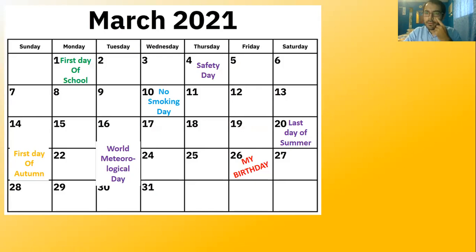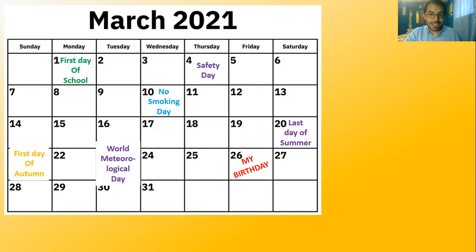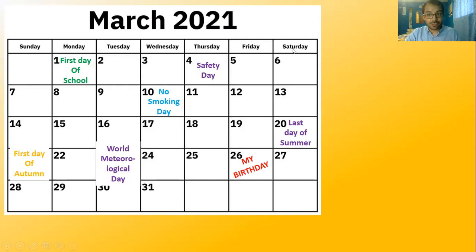Remember that the first day of the week is Sunday — not Monday. The first day of the week is Sunday. So we have: Sunday, Monday, Tuesday, Wednesday, Thursday, Friday, Saturday.